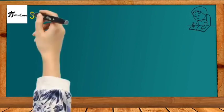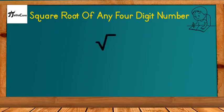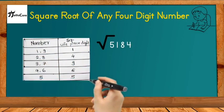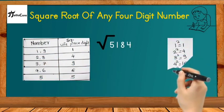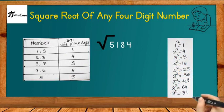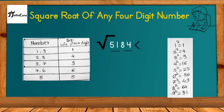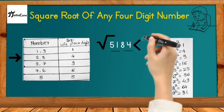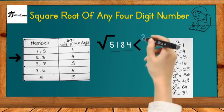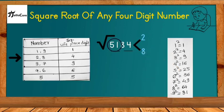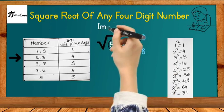Let us find the square root of 5184. We solve this using the same technique as the previous examples. First, write down the table and squares of 1 to 9. Then make pairs of digits: the first pair is 84 and the second is 51. Focus on unit place digit 4 — squaring 2 and 8 both give unit digit 4, so there are two possibilities: 2 or 8. We will finalize later.